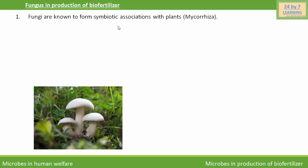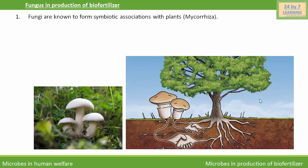Fungi are known to form symbiotic associations with plants, for example mycorrhiza. Mycorrhiza is a symbiotic association between roots of higher plants and fungi. You can see in this picture that roots of higher plants are developing a mutual relationship with a fungi, that is mushroom hair.